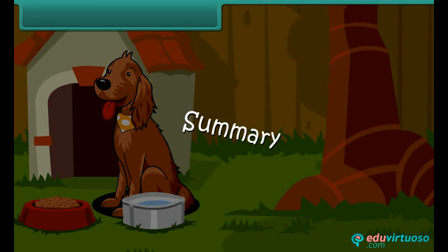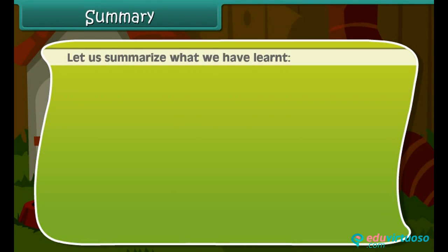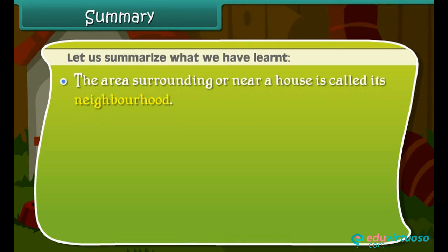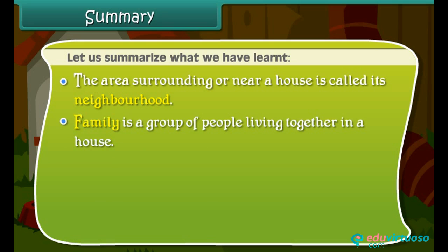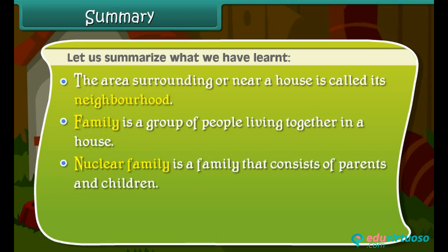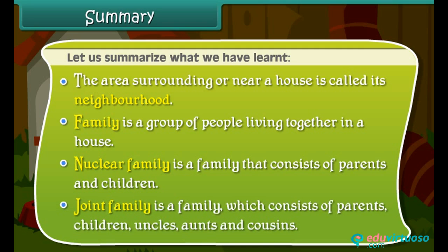Summary: Let us summarize what we have learned. The area surrounding or near a house is called its neighborhood. Family is a group of people living together in a house. Nuclear family is a family that consists of parents and children. Joint family is a family which consists of parents, children, uncles.